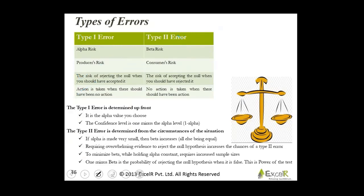That's a type 1 error. What is type 2 error? It is also called as beta risk or consumer risk. The risk of accepting the null when you should have rejected it. No action is taken when there should have been action. You have committed a murder. You should have been put behind bars. But you were released scot-free. Terming that you are innocent. Though you have committed a murder, you are released as innocent. That is type 2 error.